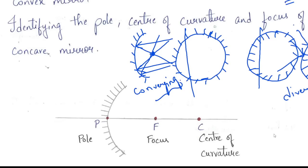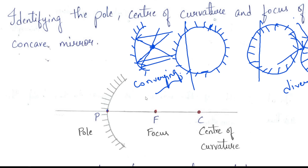This is the basic difference between concave and convex mirror. Next, we will identify what is pole, focus, and center of curvature in a concave mirror. The midpoint of the mirror is called the pole, denoted by P. Every sphere has a center, so that center also belongs to this piece of mirror. This center is denoted as the center of curvature.